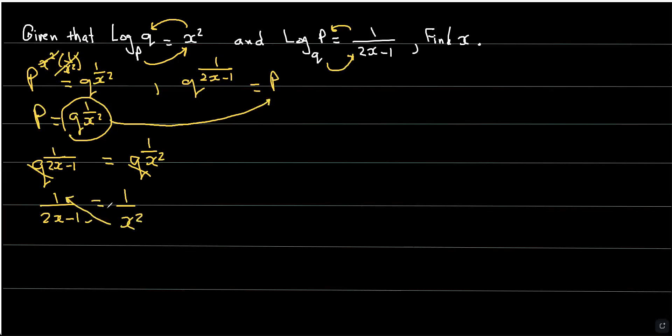Now I'm going to cross-multiply. So I end up with x squared equals 2x minus 1. Move everything to one side and equate it to 0: x squared minus 2x plus 1 equals 0. Then I have to factor this, so this is going to be x minus 1 times x minus 1 equals 0. And therefore, x equals 1.